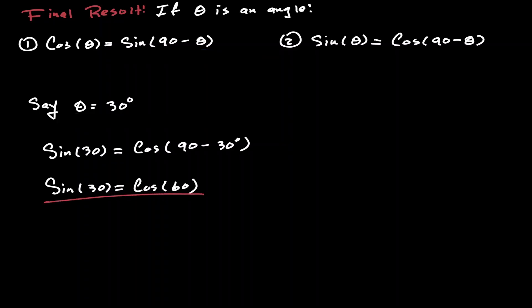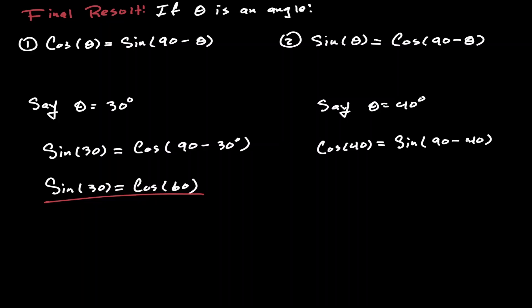Let's give another quick example. Now let's consider an angle of 40 degrees. The cosine of 40 degrees gives us the same result as the sine of 90 minus 40 degrees. Simplifying, the cosine of 40 degrees is equal to the sine of 50 degrees.